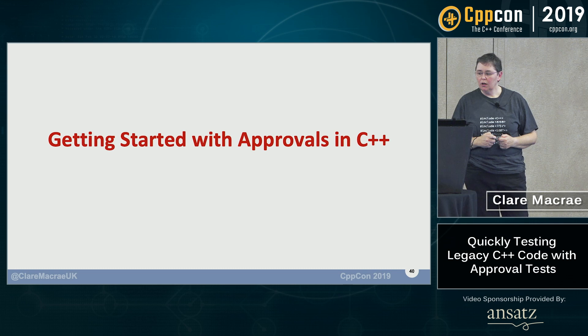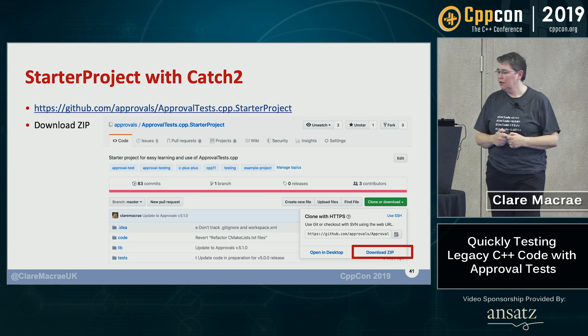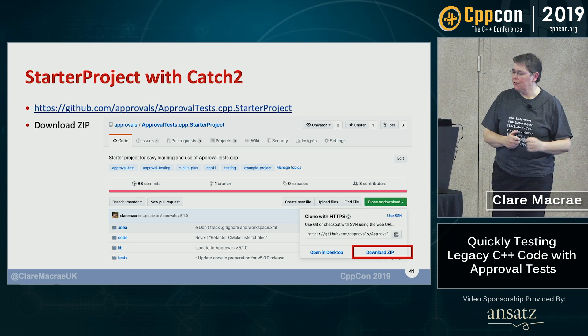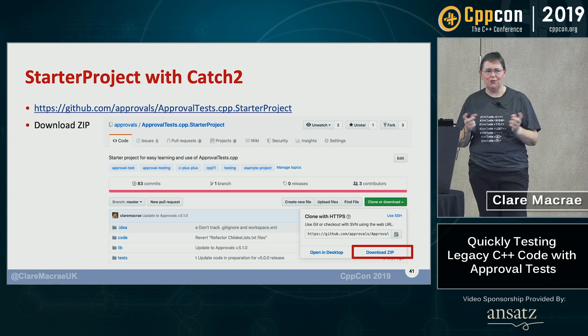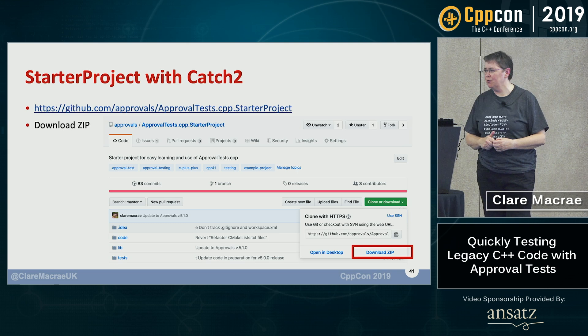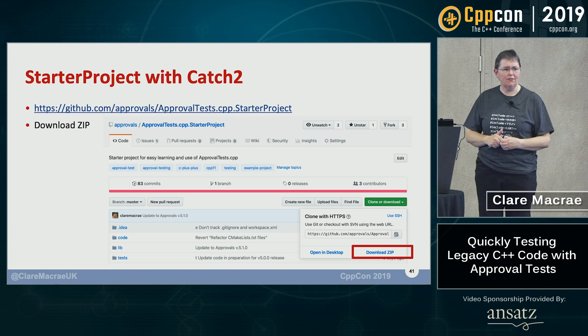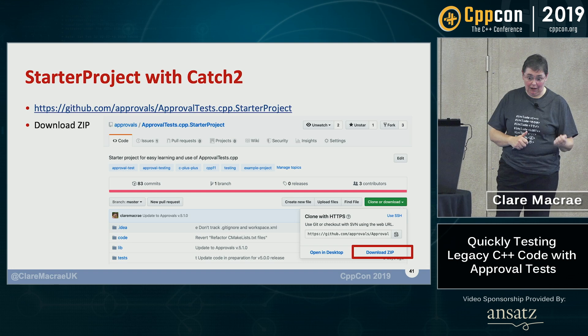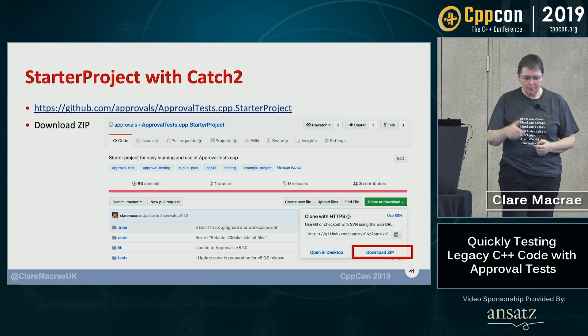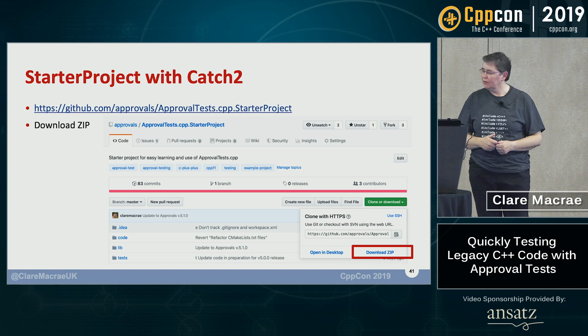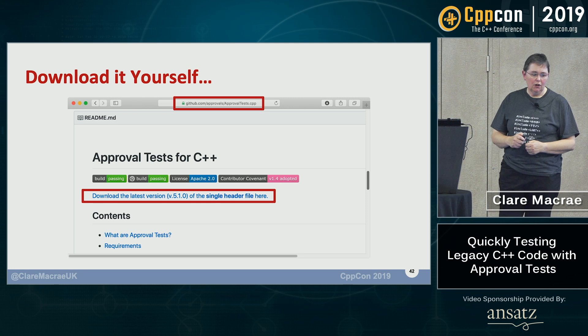Now I'll explain how to get hold of Approval Tests. If you want to experiment, we have a starter project — a minimal chunk of code you can download and open in any development environment that supports CMake, or there's a Visual Studio 2017 solution file. You don't need to fork or clone the repository — you can use GitHub's download-the-zip feature and just expand it and start experimenting.